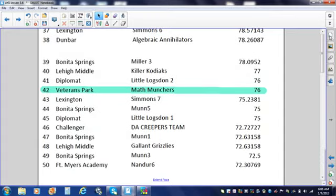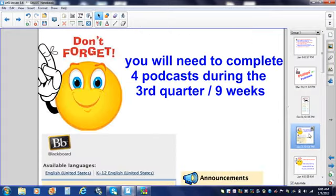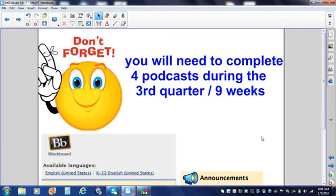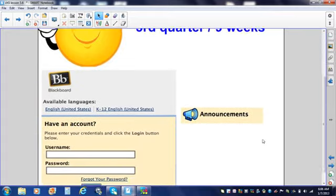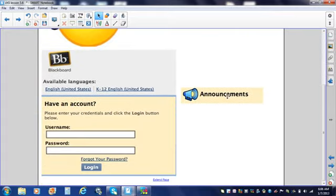So, there are our Math 7 EOC results. Just a friendly reminder, don't forget, you will need to complete four podcasts during this third quarter, or during the next nine weeks. Some of you already have some of those podcasts done. Which podcasts do you need to complete for the third quarter? That's an excellent question. Too bad you're on ProBee. Go to the Announcements page in Blackboard. The four podcasts that you need to complete during the next nine weeks are under the Announcements in Blackboard.